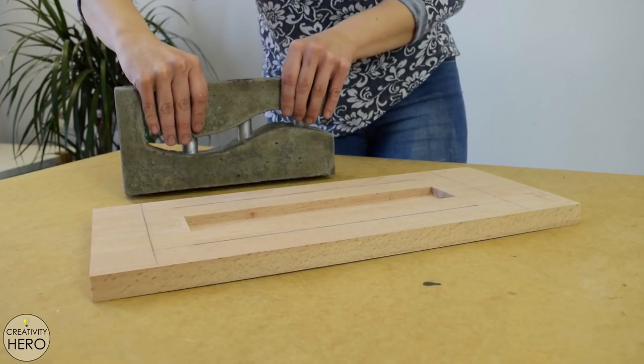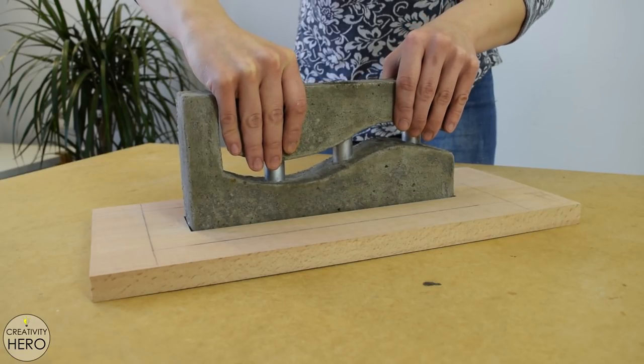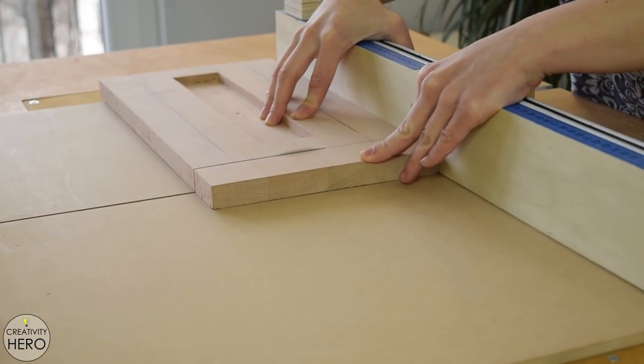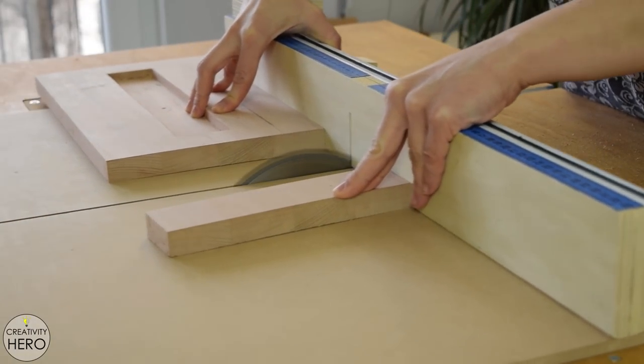Before cutting the base to its final size I place the concrete form inside to check if it is a snug fit. Everything is okay so I can finally cut the base to size on my table saw.